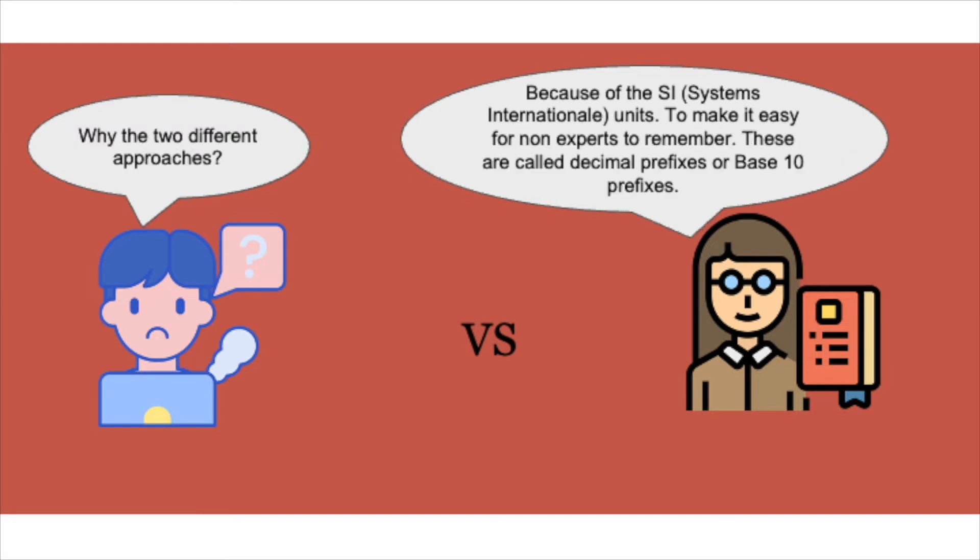Our amateur goes, well why the two different approaches? The expert goes, because of the SI, which is the systems international units, and to make it easy for non-experts to remember all of these, these are called decimal prefixes or base 10 prefixes. So prefixes are basically words which you add in front of a number. In this particular case, kilo is a prefix to bytes and mega is a prefix to bytes, so these are called denary prefixes because they operate in base 10.